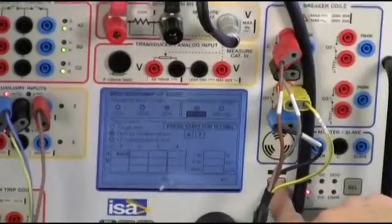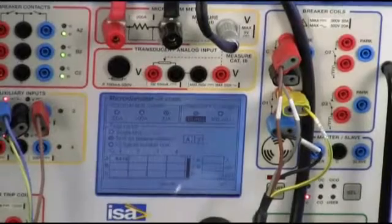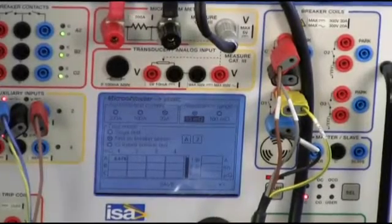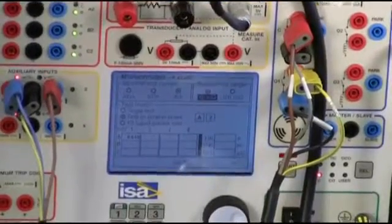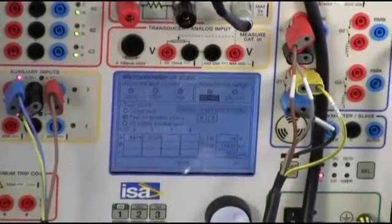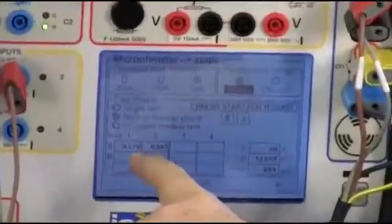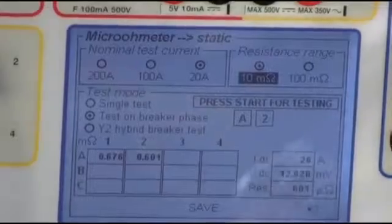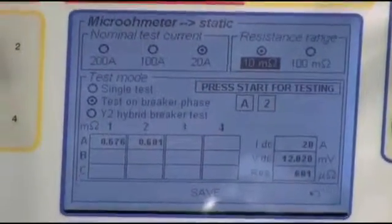Now, I press start. Again, my capacitor being charged. Okay? You see, 0601 instead of 0676. So, practically speaking, the measurement is the same, even if the test current is much less.